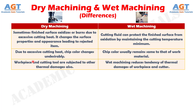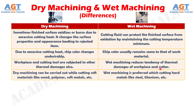Number 12: In dry machining, the workpiece and cutting tool are subjected to other thermal damages also, whereas wet machining reduces the tendency of thermal damages of the workpiece and cutter. Difference number 13: Dry machining can be carried out while cutting soft materials like wood, polymer, soft metals, etc., whereas wet machining is preferred when cutting hard metals like steel, titanium, etc.